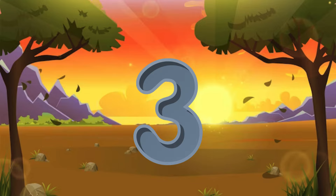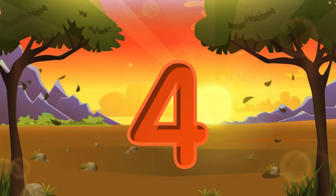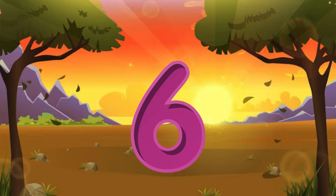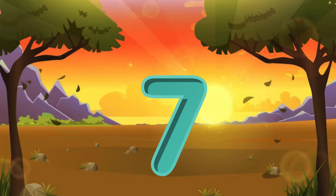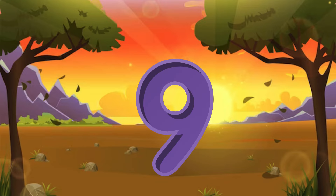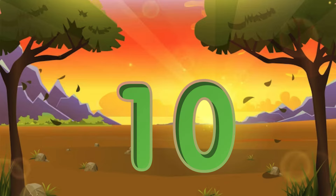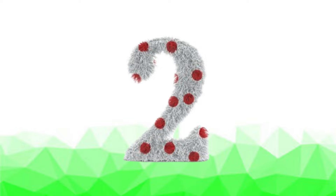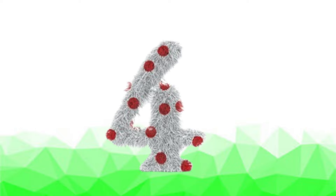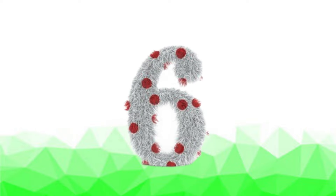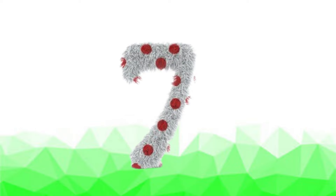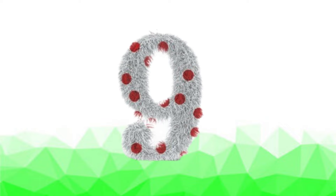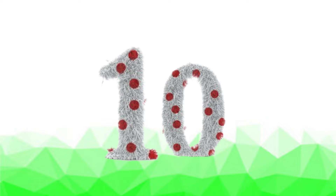One little, two little, three little numbers. Four little, five little, six little numbers. 7 little, 8 little, 9 little numbers. 10 little numbers. 1 little, 2 little, 3 little numbers. 4 little, 5 little, 6 little numbers. 7 little, 8 little, 9 little numbers. 10 little numbers.